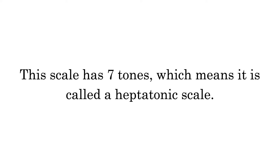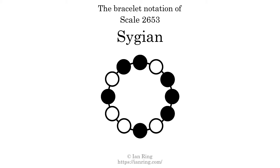This scale has seven tones, which means it is called a heptatonic scale. This is a bracelet notation diagram of scale 2653. The shaded circles represent tones that appear in the scale, and they are read clockwise, starting at the top.